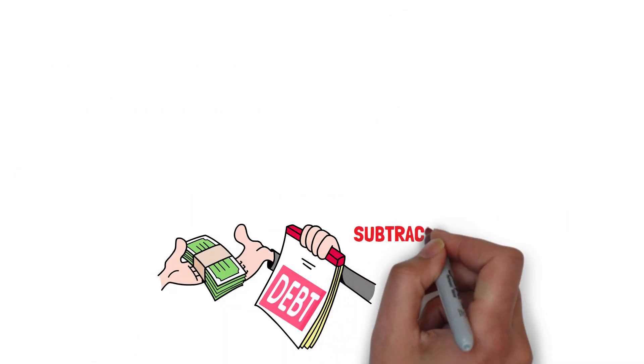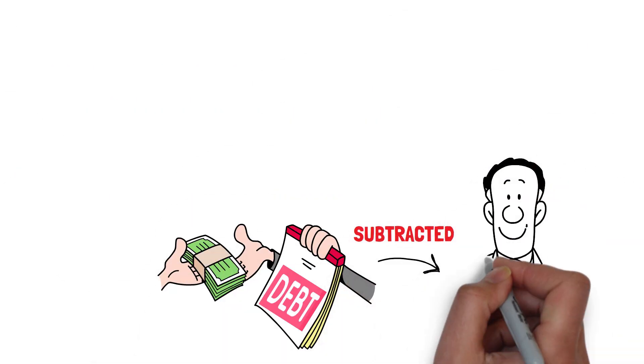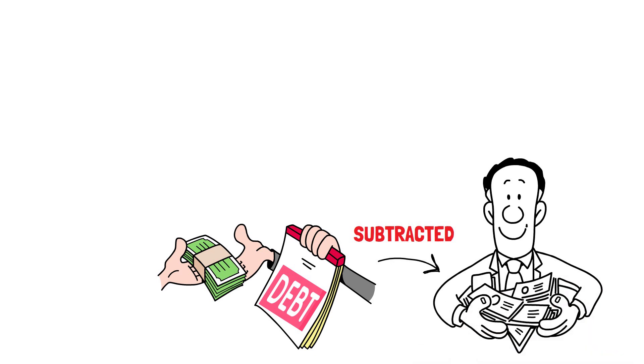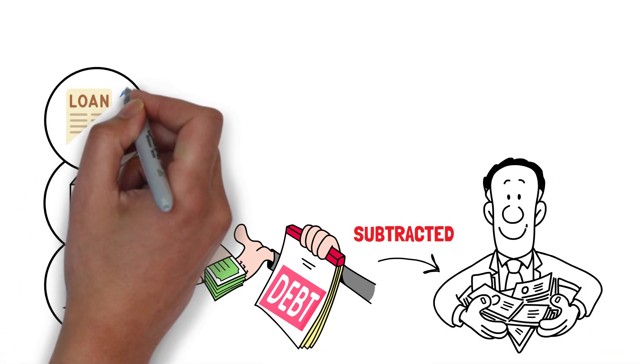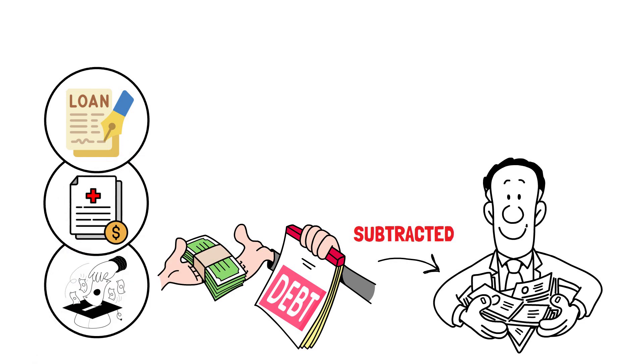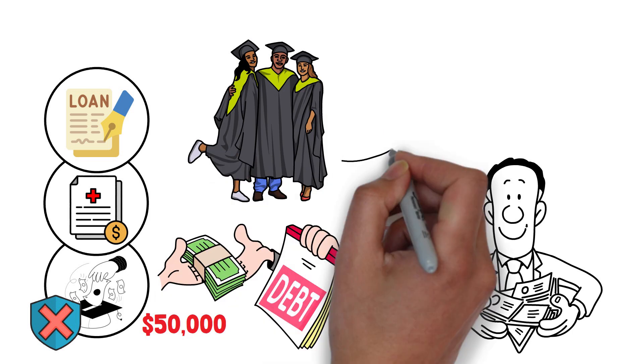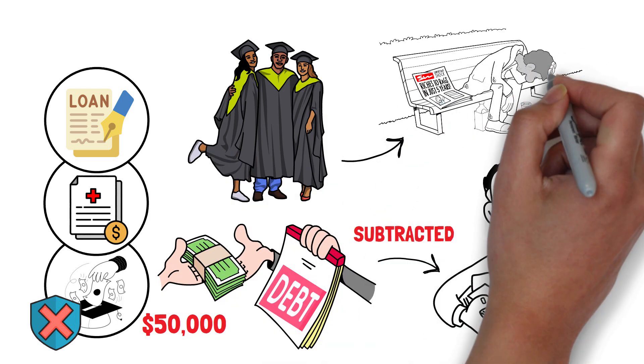Any debts you have must also be deducted from your net worth. This includes any money owed to you, such as college debts, medical expenses, or a loan from a friend or family member. If you have $50,000 in student loans, they have no collateral and thus count directly against your net worth. This is why a large proportion of recent college graduates have a negative net worth.